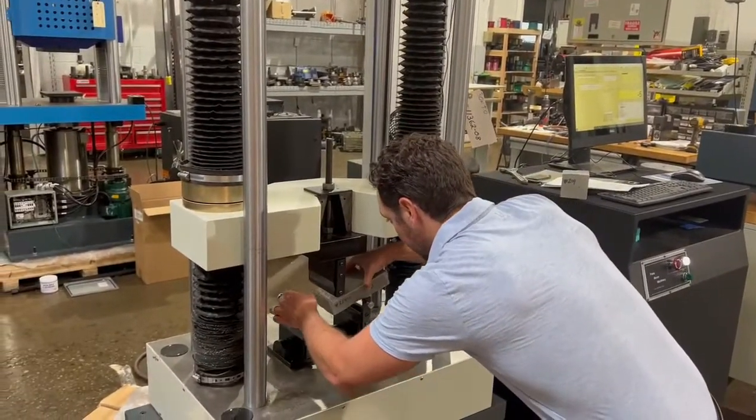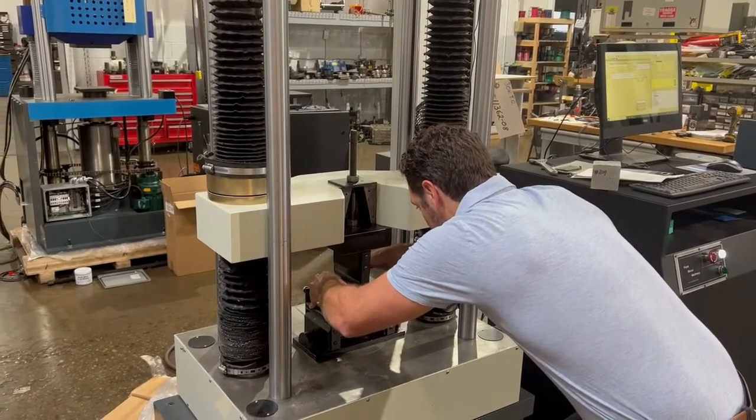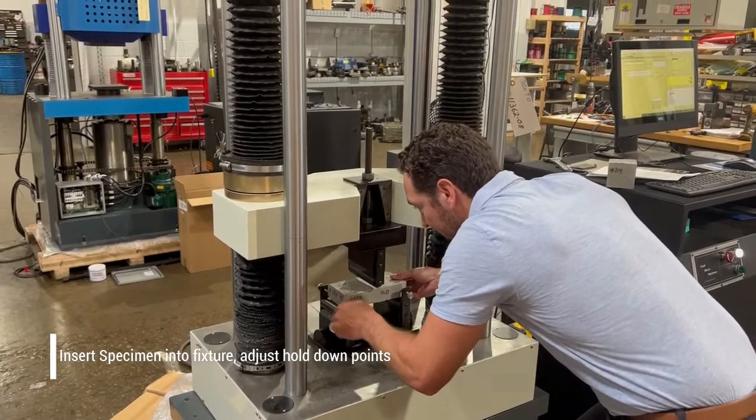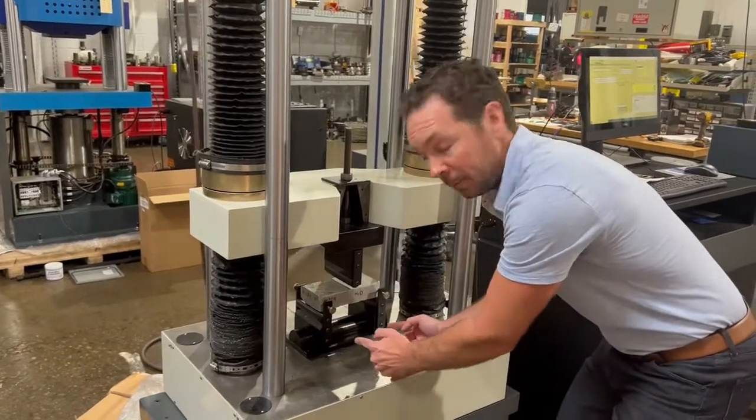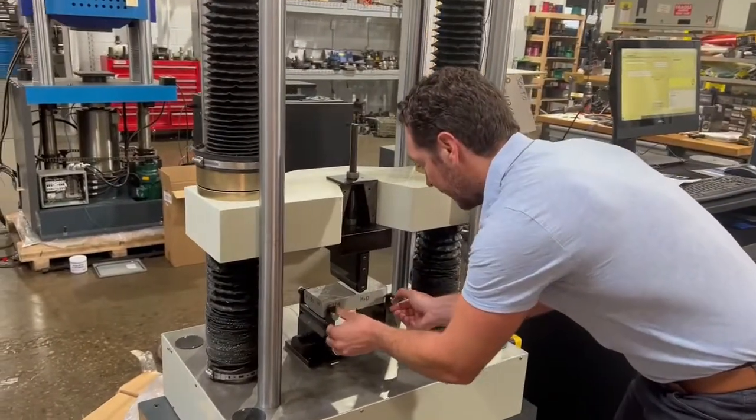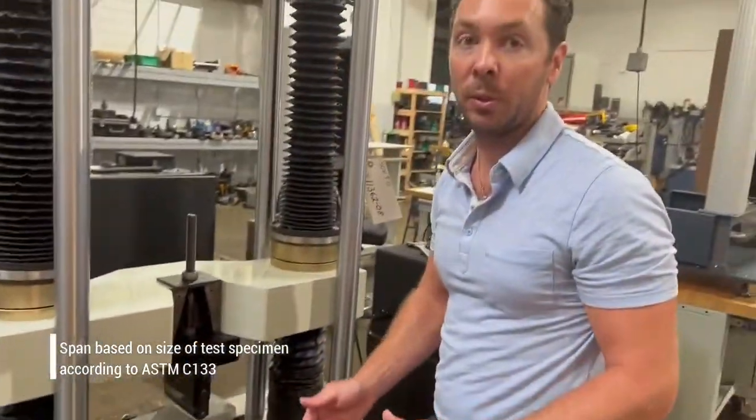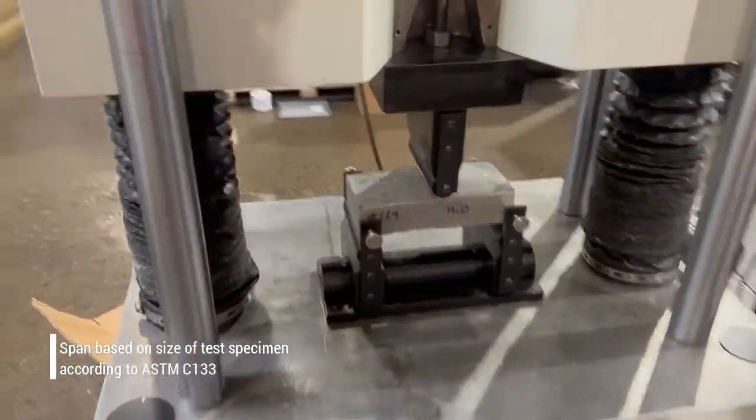Basically, insert your specimen into the fixture, adjust your hold-down points, slide it in. Right now we have a seven-inch span based on the size of our test specimen. That is all called out in the C133 procedure.